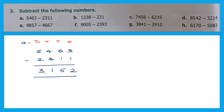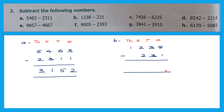Let's take question B. Write the places: ones, tens, hundreds, thousands. The question is 1,238 minus 231. Ones: 8 minus 1 is 7. Tens: 3 minus 3 is 0. Hundreds: 2 minus 2 is 0. And the thousands digit 1 remains. The answer is 1,007.